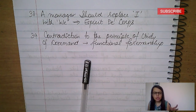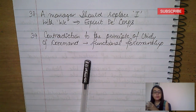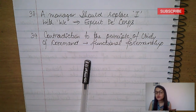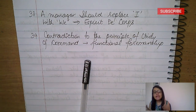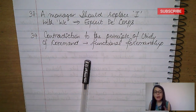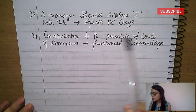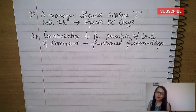Fayol and Taylor principles have many similarities: initiative, cooperation not individualism, stability of personnel, and development of each and every person to greatest efficiency and prosperity. However, the major contradiction is that Fayol strongly advocates unity of command, but Taylor does not — because in functional foremanship, there are eight specialists giving orders, so unity of command is violated. Therefore, functional foremanship is a contradiction to the principle of unity of command.